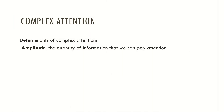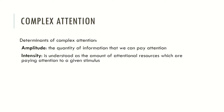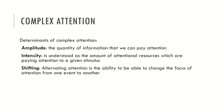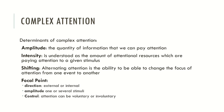Amplitude: the quantity of information that we can pay attention to. Intensity: typically understood as the amount of attentional resources which are paying attention to a given stimulus. Shifting: alternating attention is the ability to change the focus of attention from one event to another. And the focal point, typically distinguished by three major aspects — Direction, which may be external or internal; Amplitude, we can focus our attention on one or several stimuli; and Control, where our attention can be voluntary or involuntary.